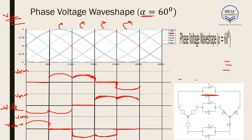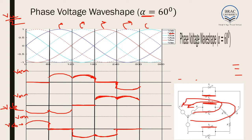For the next 60 degrees, switches 3, 4, and 5 are on. The output voltage can either be VCA or VBA. In this range, VCA is the maximum. Since VCA is the maximum, current starts from C and terminates at A. As a result, the magnitude of VCN equals half of VCA, the magnitude of VAN equals minus half of VCA, and the magnitude of VBN is 0.